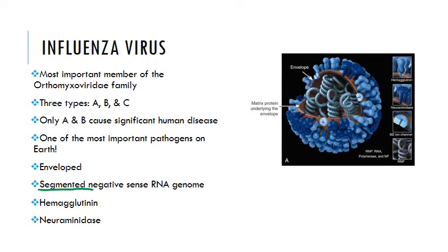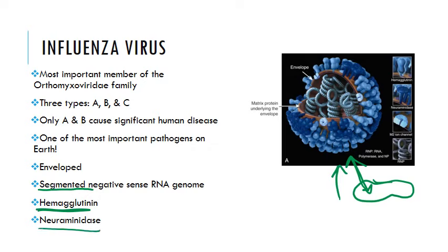Influenza virions can appear in two different ways: they can be spherical, as shown here, or tubular in shape. They're enveloped and the capsid doesn't restrict between these two structures. There are two glycoproteins contained within the envelope: hemagglutinin and neuraminidase. There are also membrane proteins known as M2, and an internally lining matrix protein, M1 — that's the brown part here.